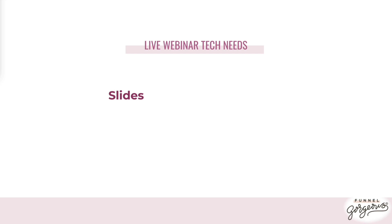The first thing you need is slides — very similar to what you're looking at right now, which is a slide deck. There are a couple of different programs you can use. Canva is one we love — it's an online web-based program with a free version and a pro version. Google Slides is what we actually use; we love it because it's very versatile, you can load it on any machine, share it with anyone, and it's completely free.